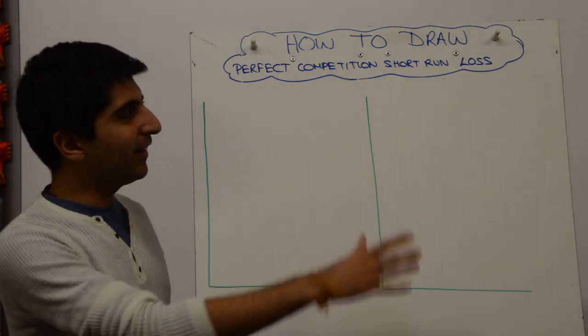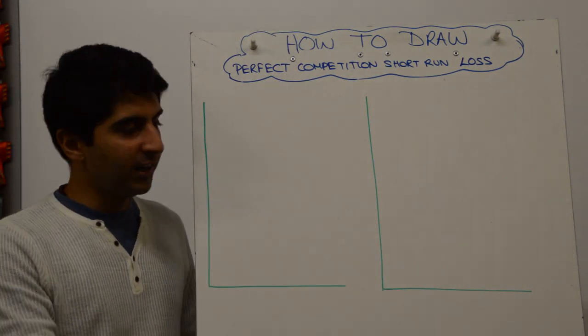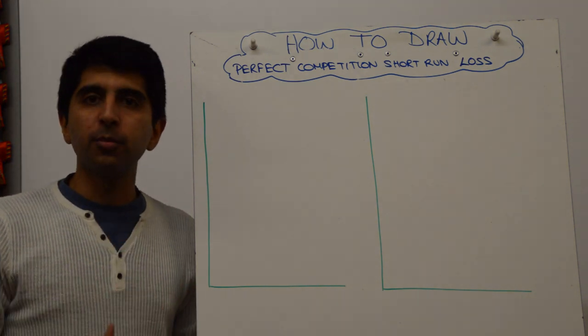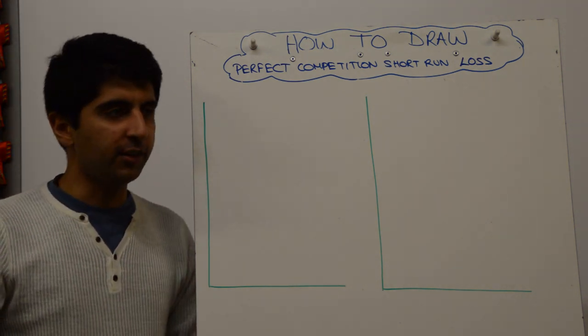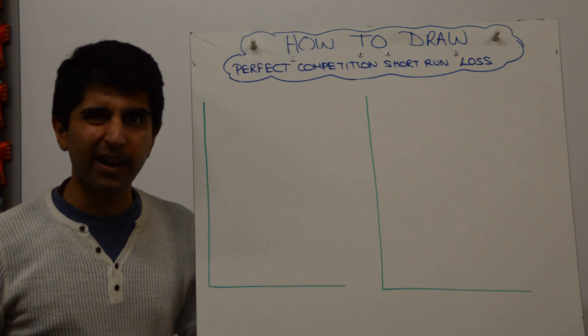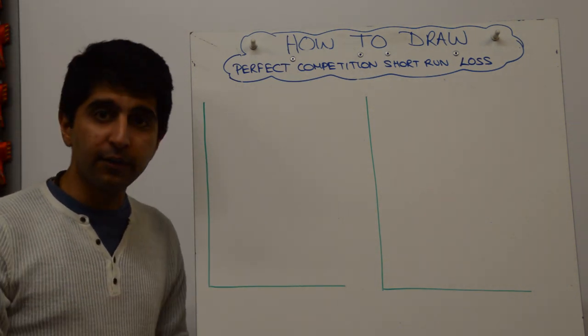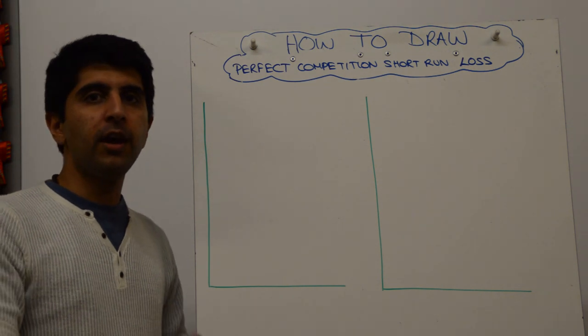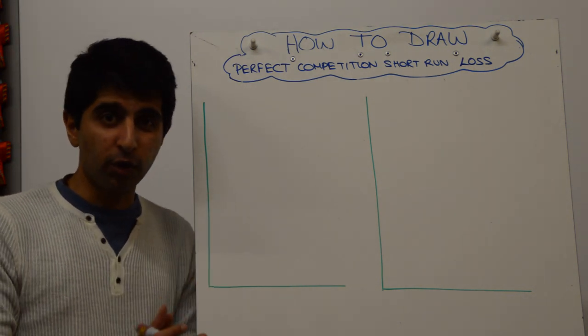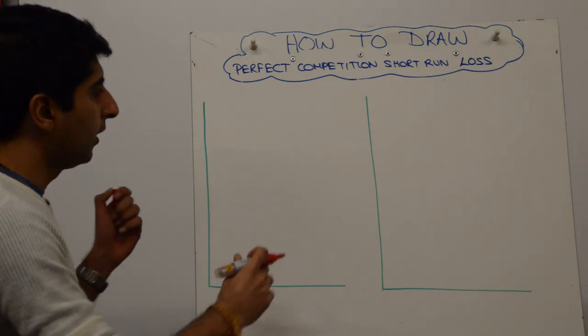Hello everybody, welcome back. Another tricky diagram to draw this one - a short run subnormal profit made in perfect competition, and how the market structure kind of corrects that. Again, the theory is easy to get. If you haven't understood the theory, watch my previous video and then come back to this. This is all about constructing the diagram. Let's go.